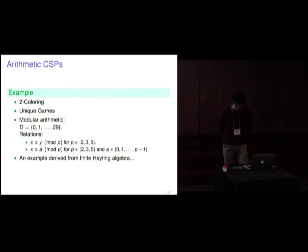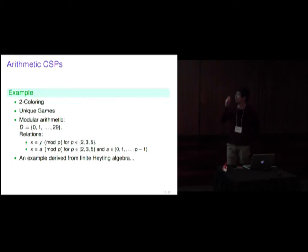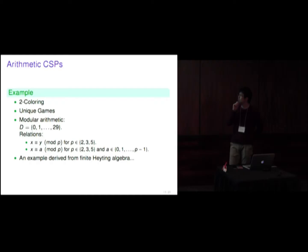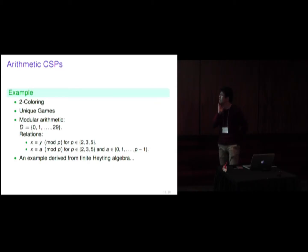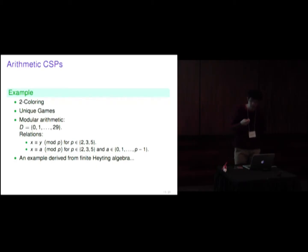In this talk we only look at the first direction, since the second is obtained by simple modification of existing work. Let's see some examples of arithmetic CSPs. The first one is two-coloring, and the second is unique games — both match the known results. Another interesting example is modular arithmetic: suppose D is the set {0, 1, ..., 29}, and we have two relations: X ≡ Y mod P where P is 2, 3, or 5, and X ≡ A mod P where P is one of 2, 3, 5 and A is in {0, ..., P-1}.